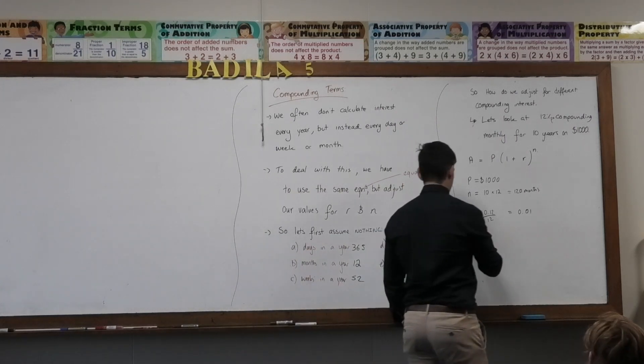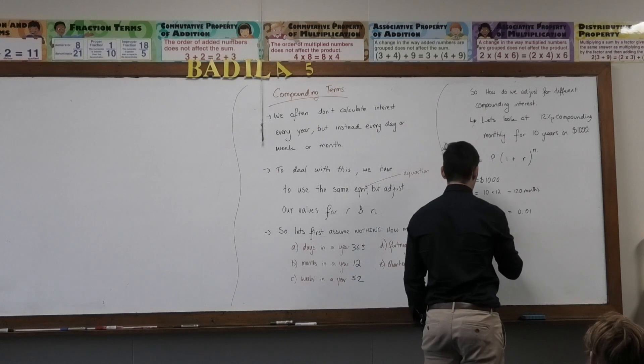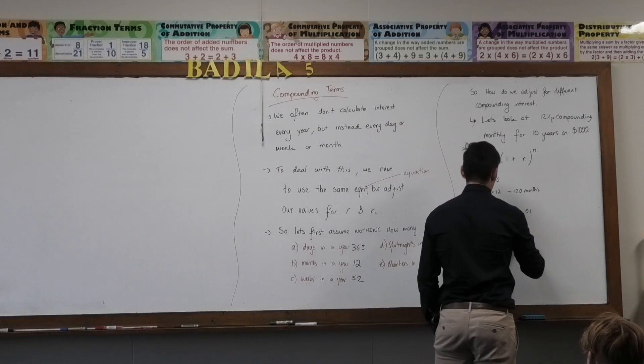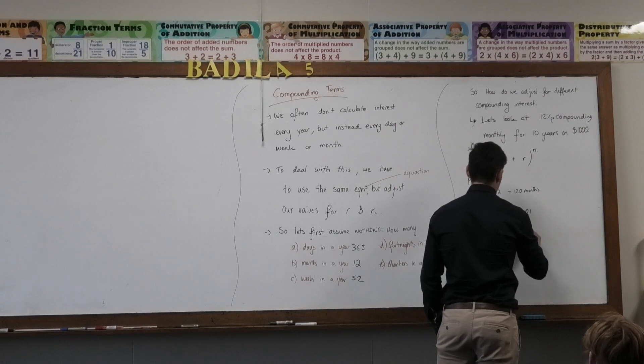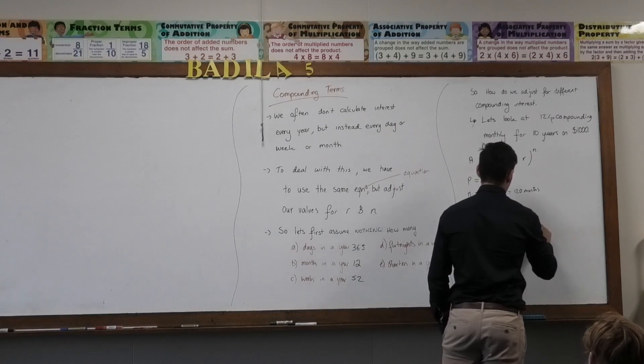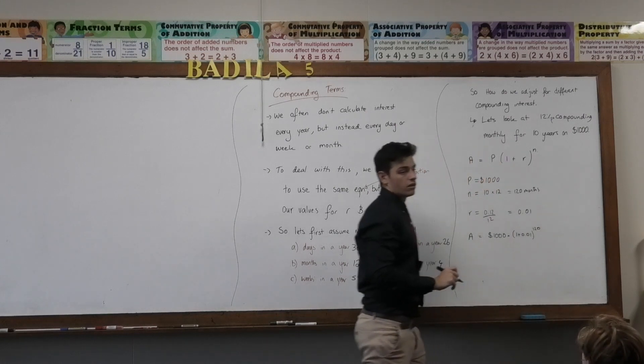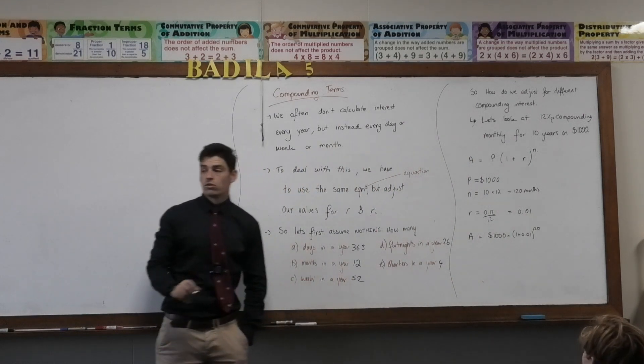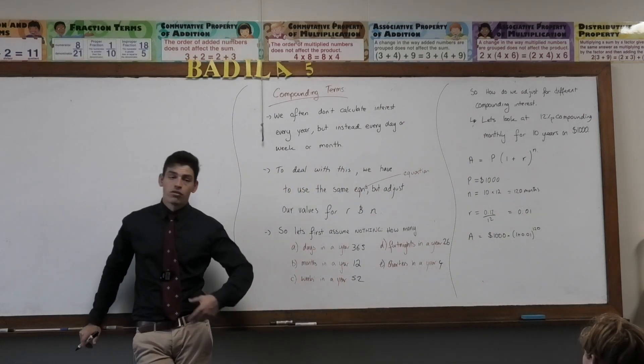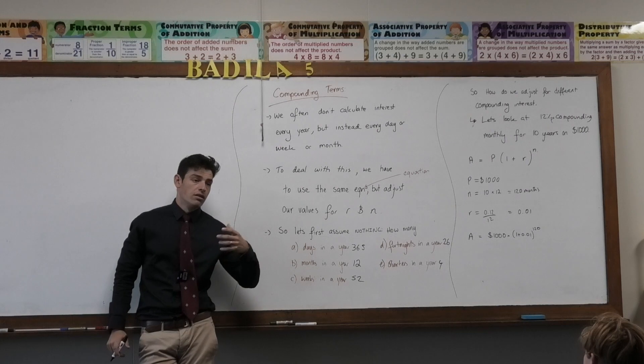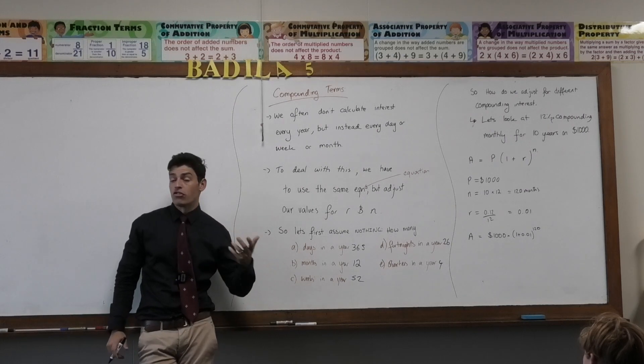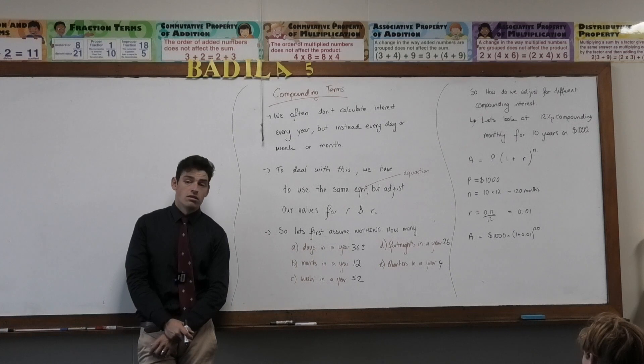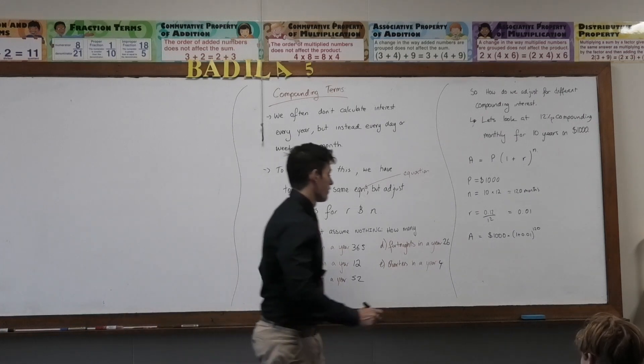So A should equal 1,000 times (1 plus 0.01) to the power of 120. So what do we do? We multiplied our number of terms by the number of months in a year, and we divided the interest rate by the months of the year, correct? So let's get an answer for that, and then we'll go through all the differences tomorrow.